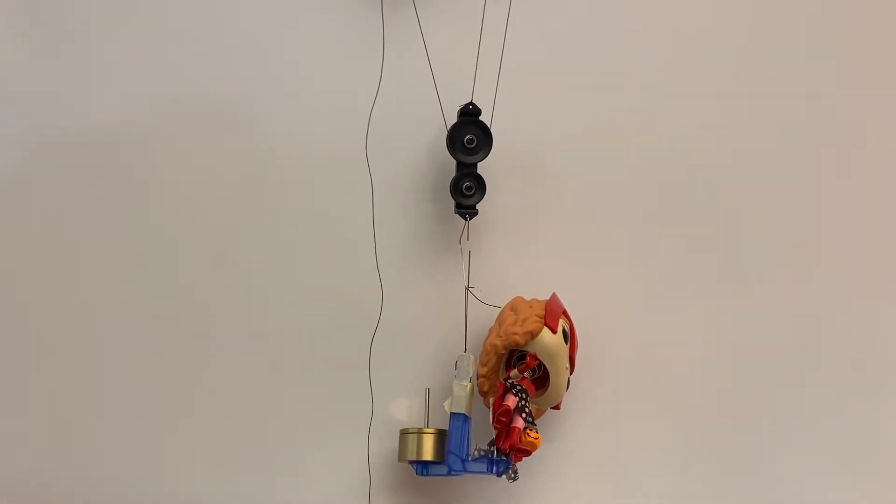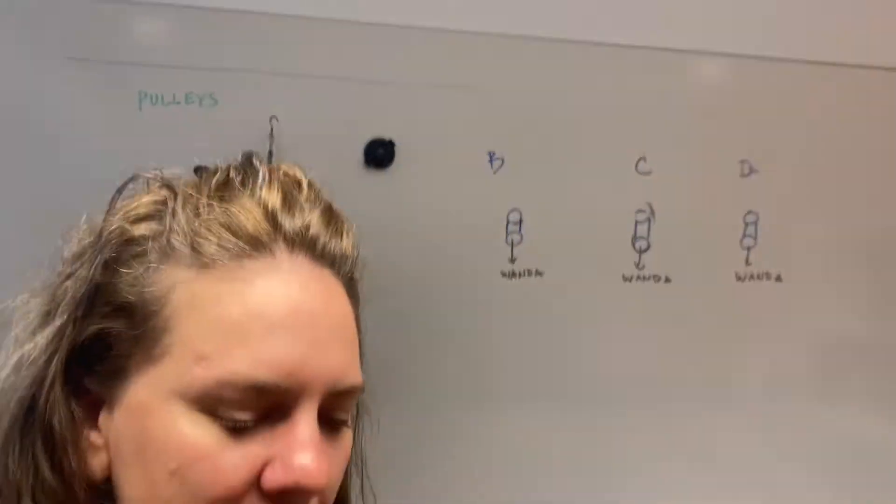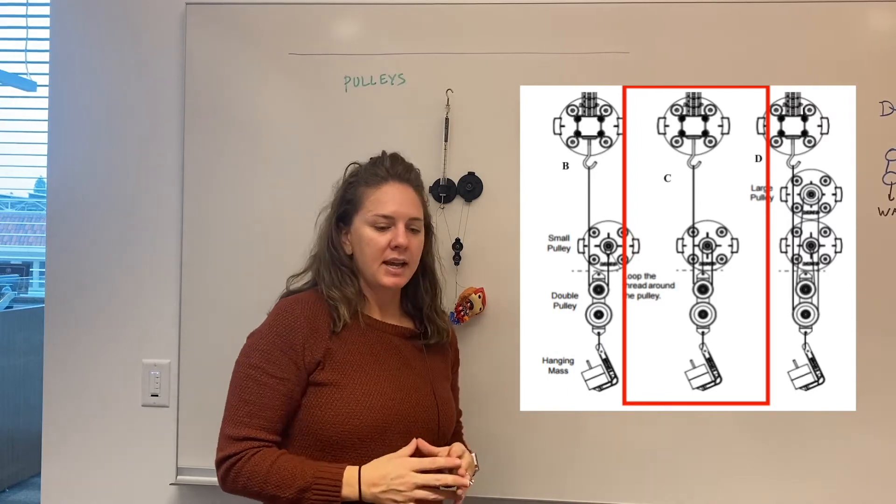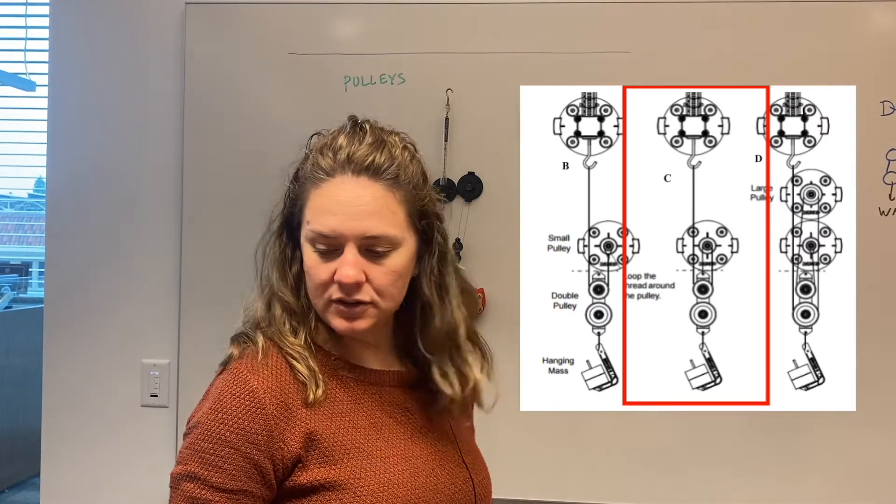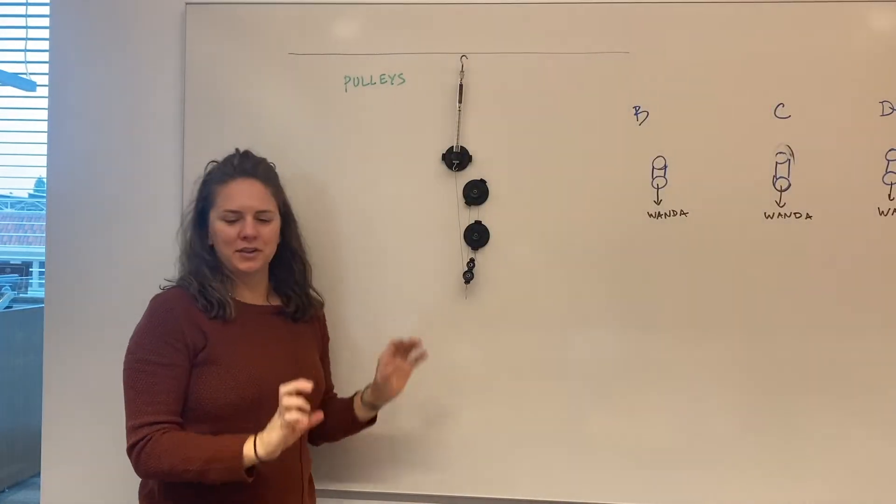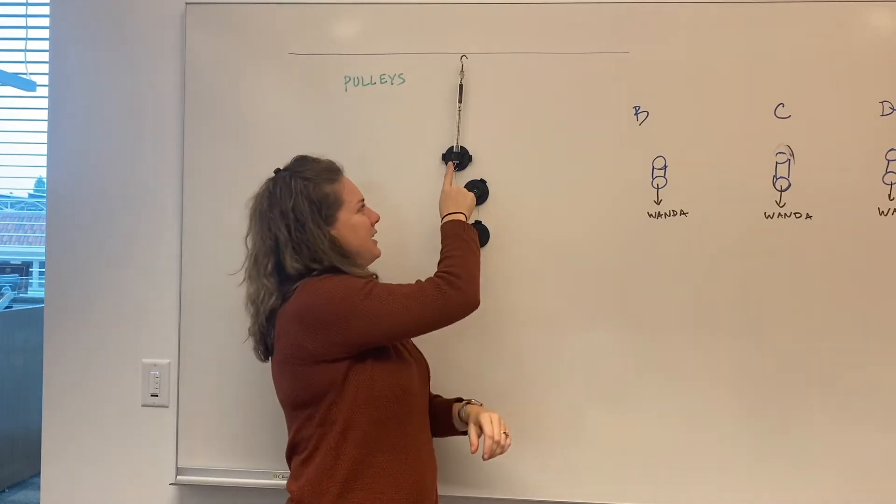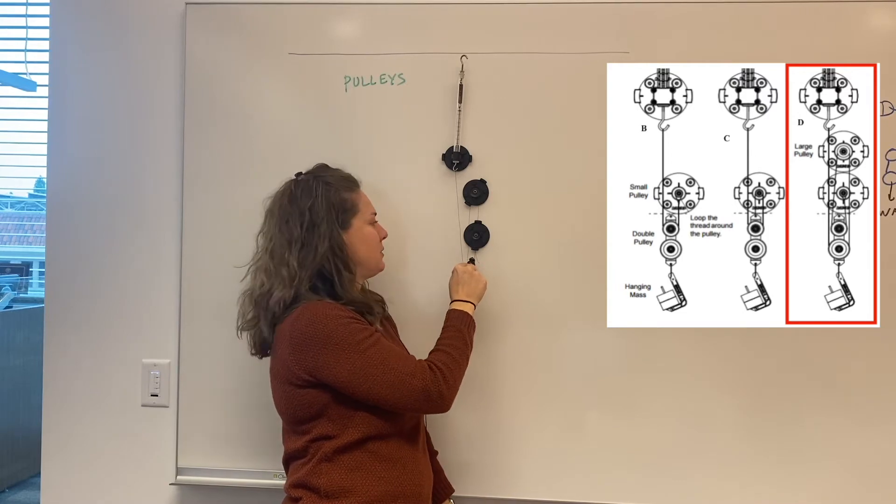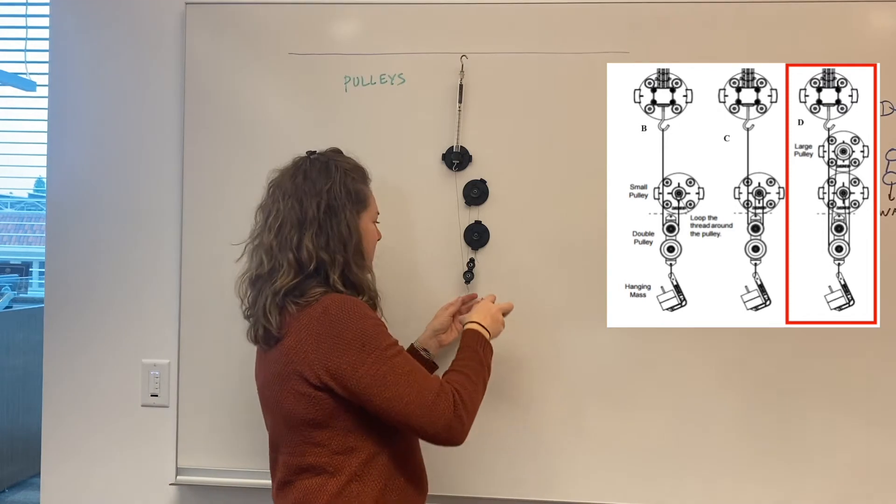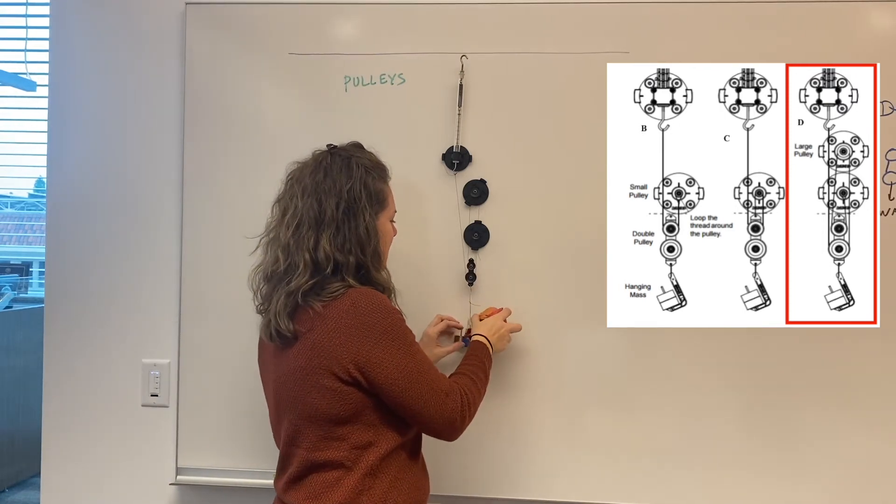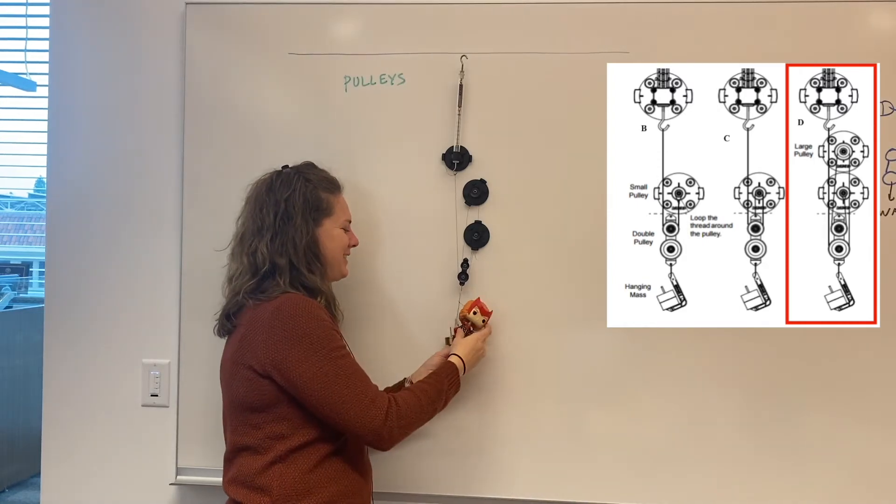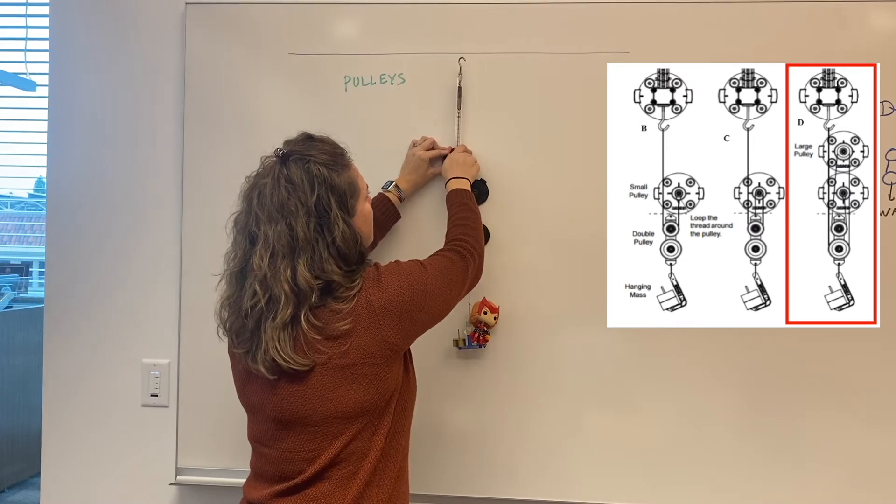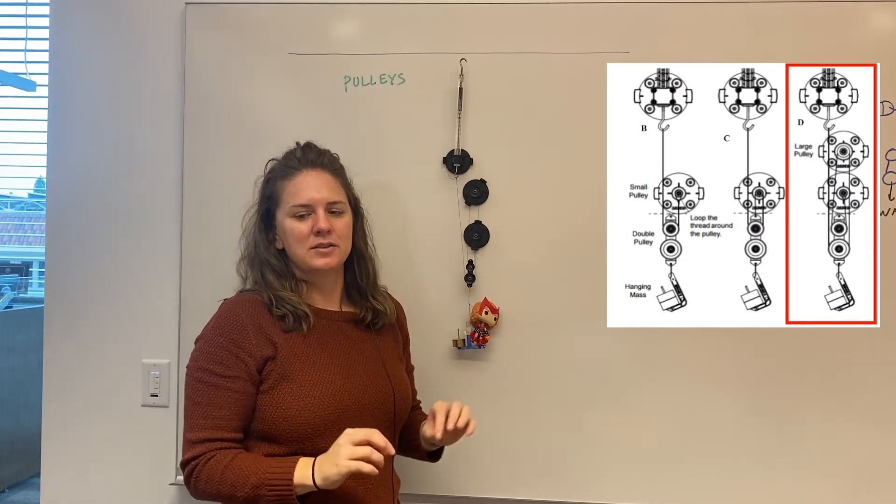Here's our Wanda. Draw that free body diagram, see if you can write the equilibrium equations. And then we'll bring up the very last scenario, scenario D. I have one string that's attached to my spring scale. It goes through this bottom pulley, up over this big pulley, through the top pulley of my double pulley up top here. Let's add Wanda in her rig. Here's our Wanda. So what is my spring scale now reading? It's just above 0.5.